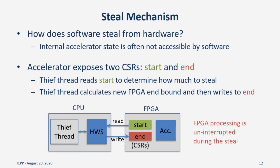The next challenge arises due to the limitations of interfacing with an FPGA. The internal state of the FPGA is not readily available, and we need access to this internal state in order to steal from it. The FPGA maintains its own start and end index values, and exposes these values to the CPU by linking them to CSRs in the FPGA design. To steal work from the FPGA through HWS, a thief will read the start CSR, calculate how much work is remaining and thus how much work to steal, then write the new endpoint to the end CSR to complete the steal. During this process, the FPGA continues processing its workload unimpeded, which is highly beneficial to its performance.